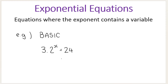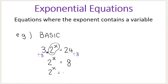What about something like three times two to the power of x equals twenty-four? First, work on isolating two to the power of x — getting that by itself. This is being multiplied by three, so you need to do the inverse operation: divide both sides by three. So you have two to the power of x equals eight. Then we follow the same rule — get the bases the same. Eight is two to the power of three. Once the bases are the same, you can drop them, and x is equal to three.